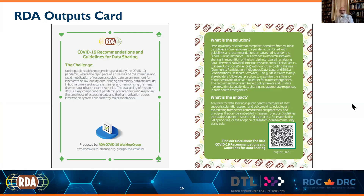RDA output cards will be familiar to those who know the RDA. When outputs are created by the RDA community, these output cards are created as a way to provide easy access into the guidelines and recommendations. As you can tell by the QR code, it's also intended to be typically printed out as a single double-sided sheet — something that could be handed out at an event or to a community or colleague.